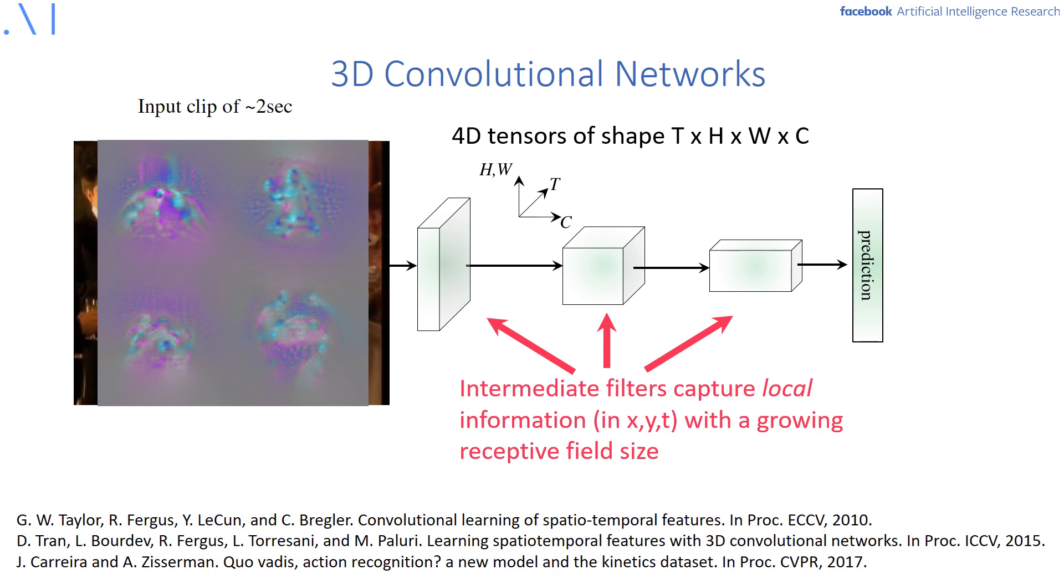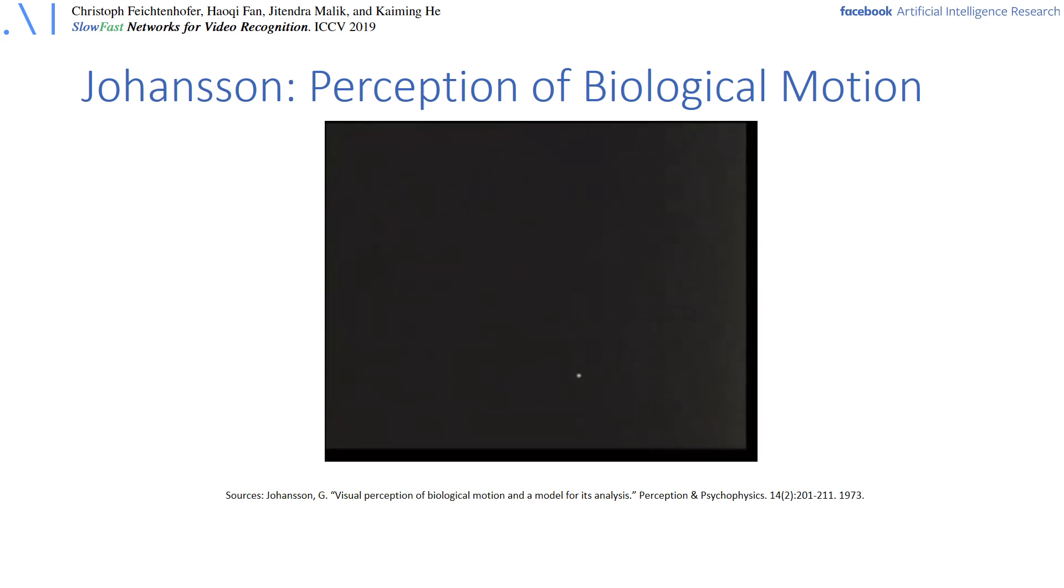At the output of the network the prediction is formed and the intermediate filters capture local information in XYZ with growing receptive field sizes. SlowFast is loosely inspired by neuroscience. Please have a look at the following video from an experiment around 50 years ago.